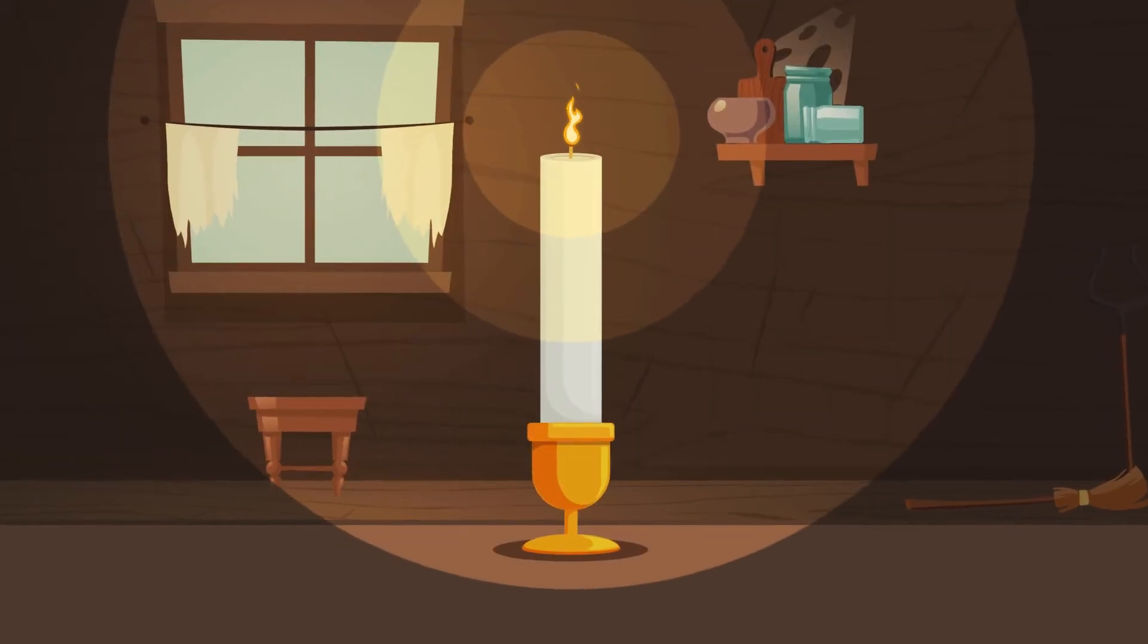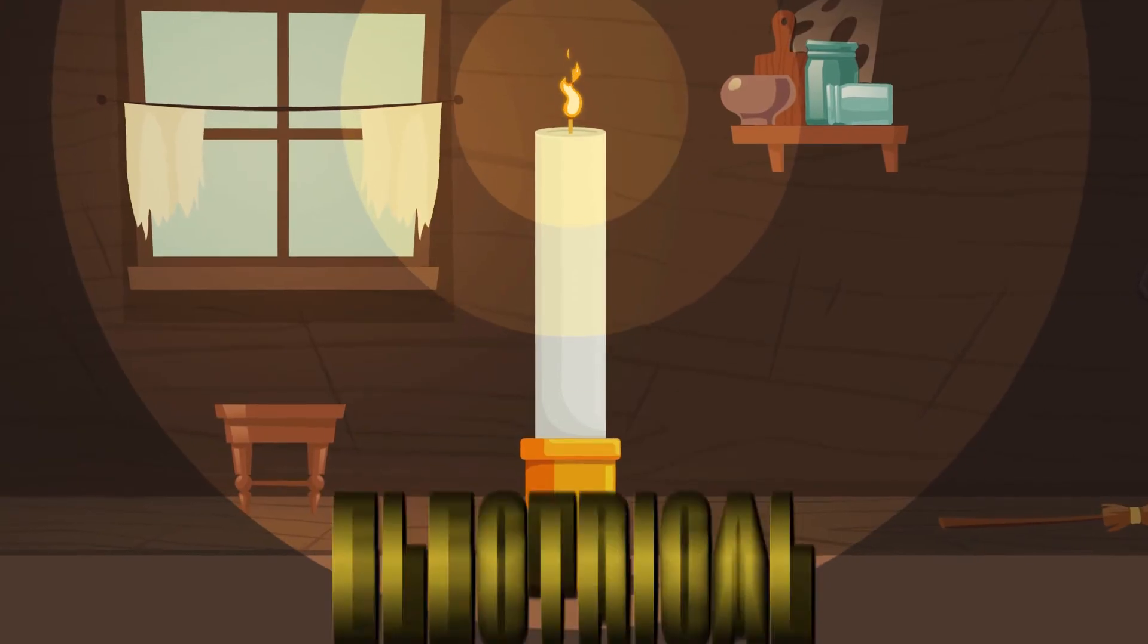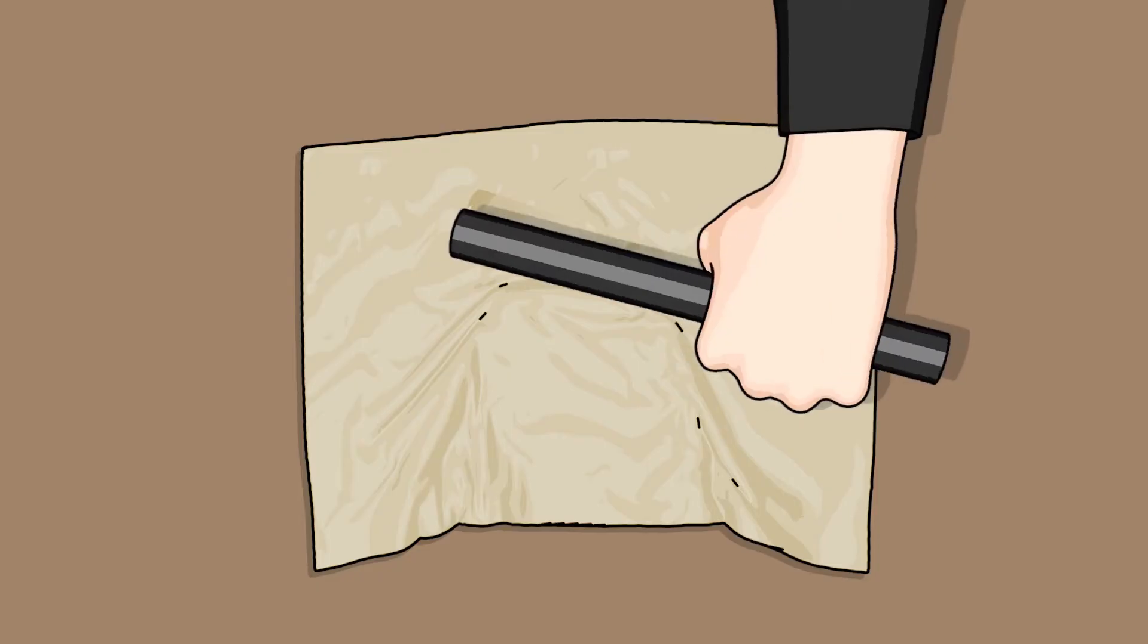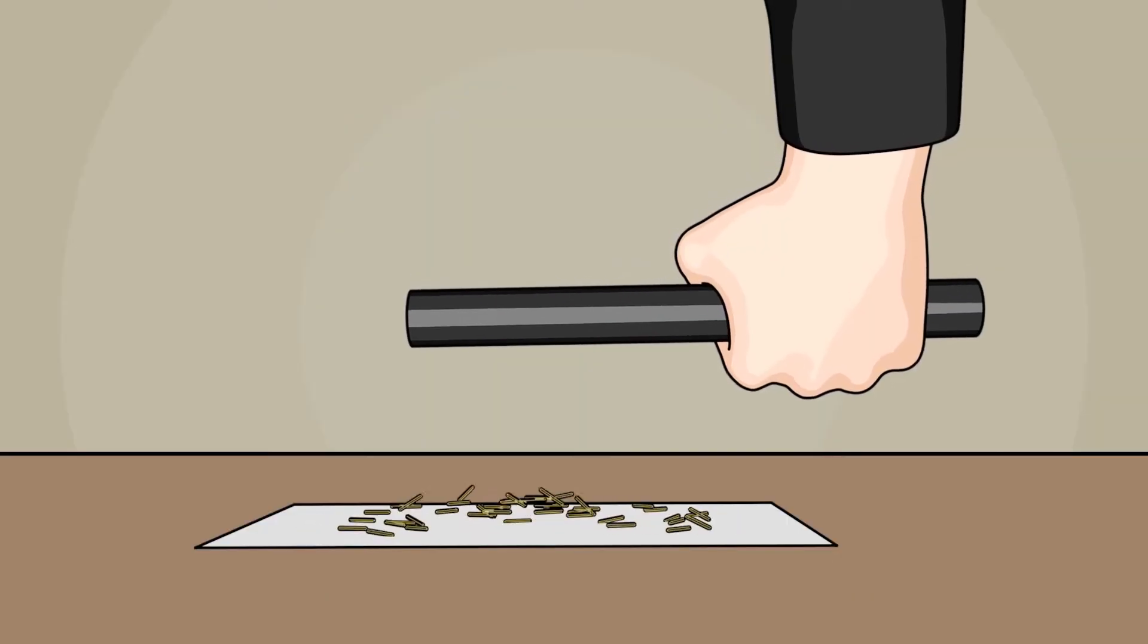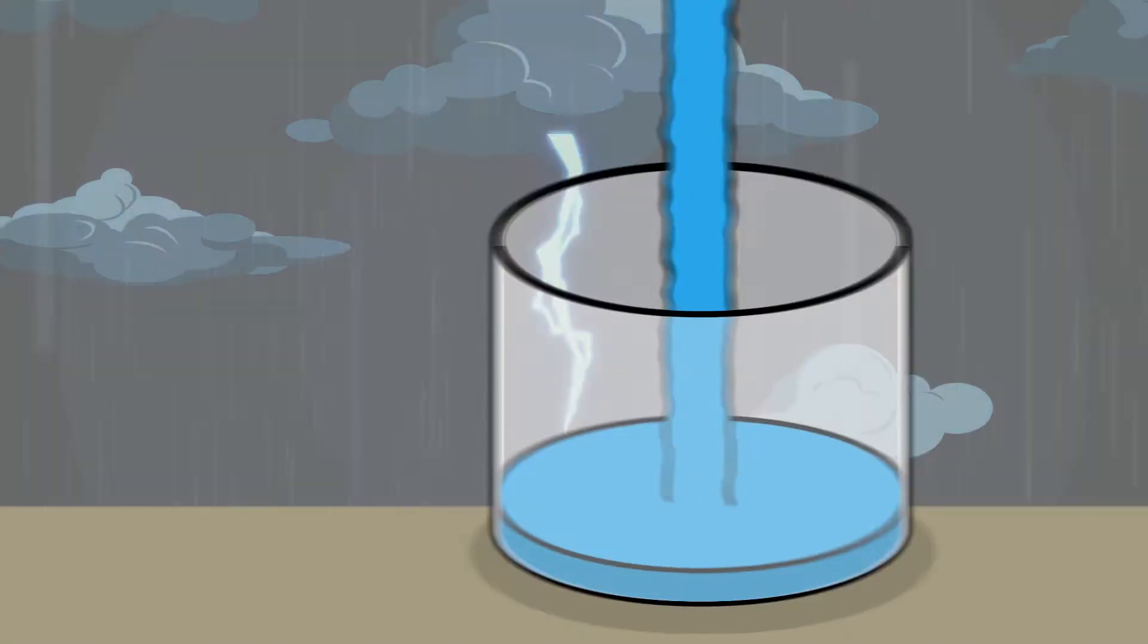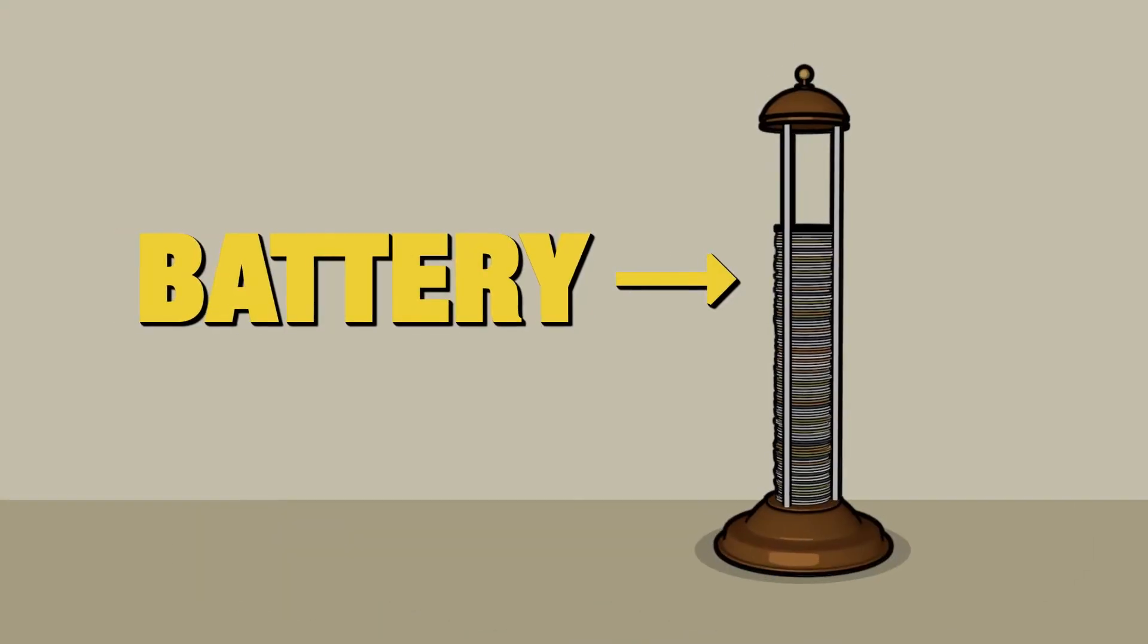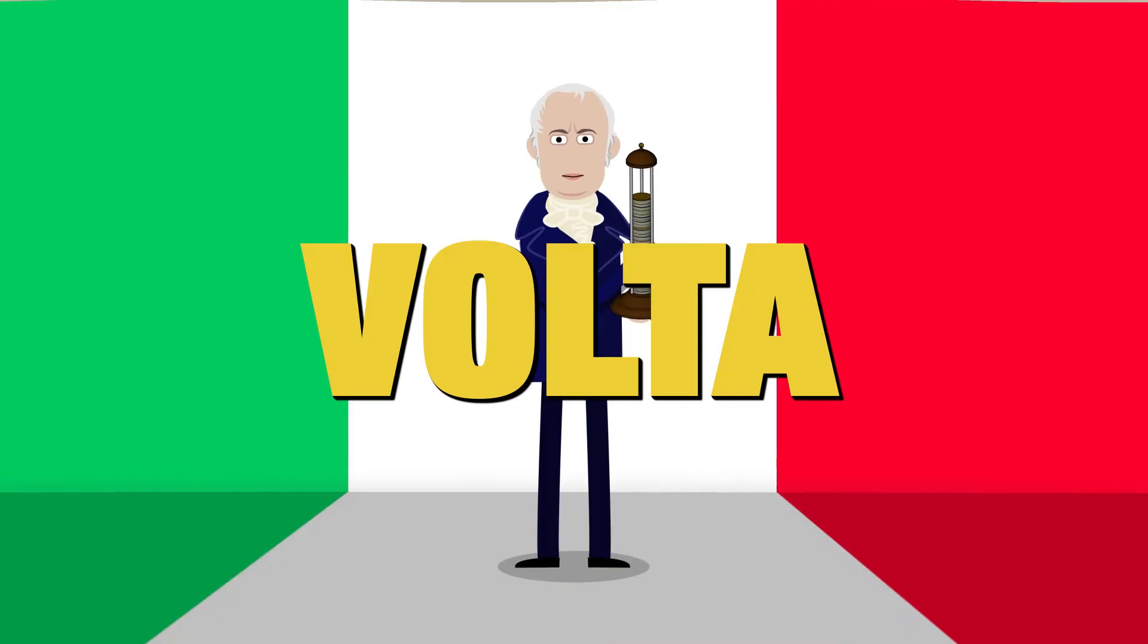At that time, electricity is still very little known and has no practical application. We know about electrical charges, those obtained by rubbing an amber or glass stick that attract straw, the cloud that produces lightning, those created by combining two metals in a conductive liquid. It is the battery the Italian Volta invented shortly before.